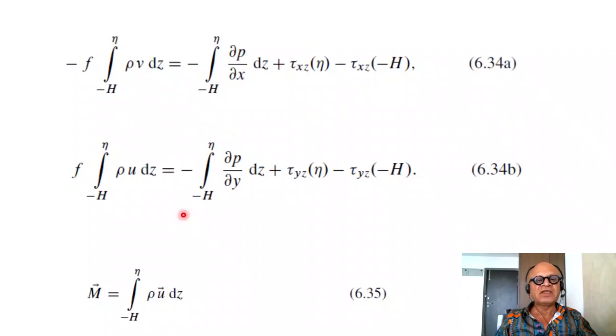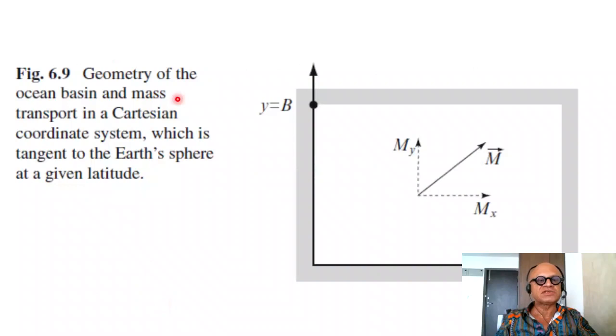So let's define a mass transport function as integral of the current from minus H to eta multiplied by density. So this is the mass transport in each direction, which is just the integration. We don't make any assumption of the vertical shear here like we did in the shallow water equation. So this is what Henry Stommel did. He took the steady-state equations, linearized and assuming flat bottom and the sea level being much smaller than the depth of the water column.